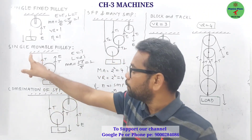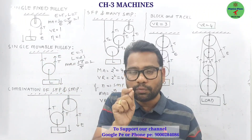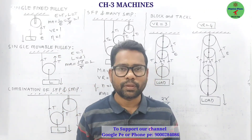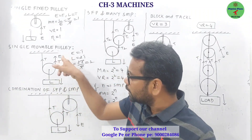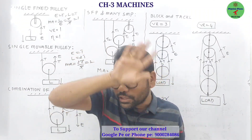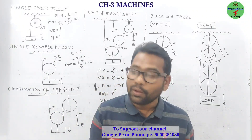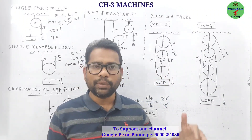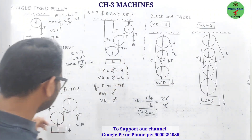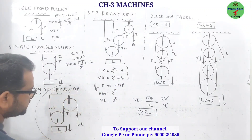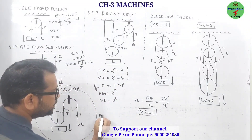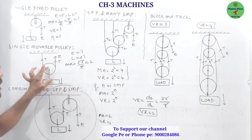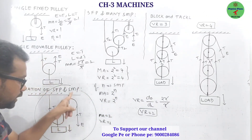One problem with a single movable pulley is that effort must be applied in the upward direction, which is not easy. To change the effort direction, we combine the single movable pulley with a single fixed pulley. There is no change in the mechanical advantage or velocity ratio — both remain 2 — but the advantage is that the effort direction can now be downward.